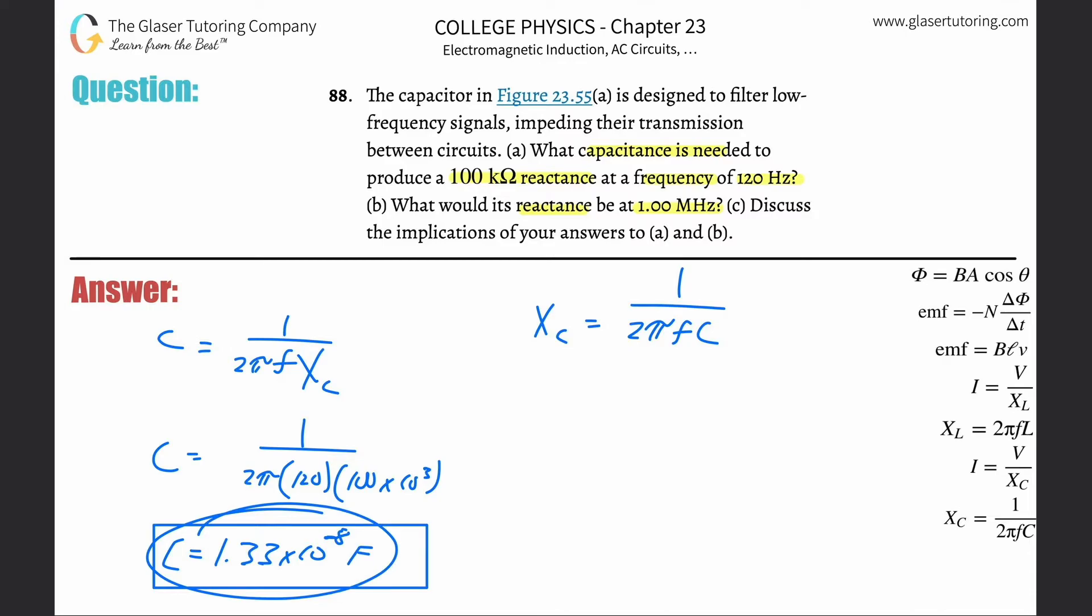The capacitance is staying constant, so what we found over here we're going to plug in for C. The frequency has now changed, so just change that value. This is 2π multiplied by the frequency in megahertz - careful, we have to convert that.